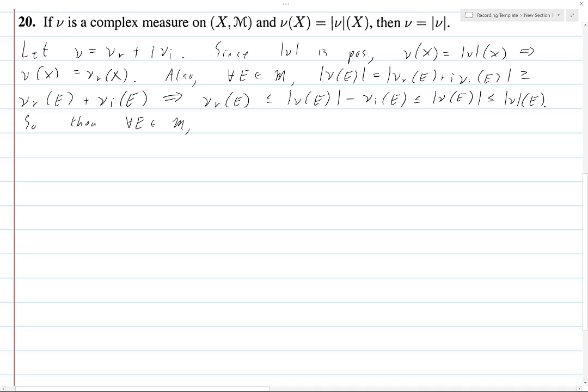I guess this one could have... whatever. Formatting doesn't really matter. What matters is the actual math. So, we have ν_r of e. This is, because this space is finite, we can write it as this.